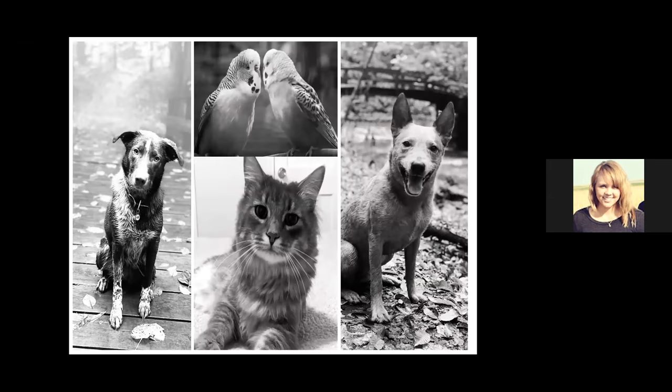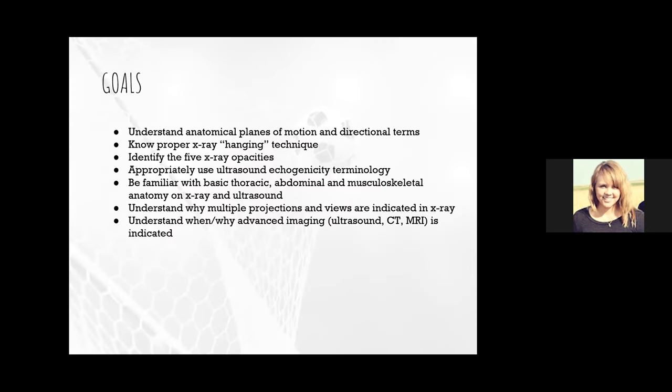Just in case you hear my pets in the background, I apologize in advance. So, some of the things we're going to cover: anatomical planes of motion and directional terms, how we properly hang an x-ray, identifying the five x-ray opacities, and using appropriate ultrasound terminology. We'll go through basic thoracic, abdominal, and musculoskeletal imaging on x-rays and ultrasound. And importantly, why sometimes we need multiple projections and views, and why x-rays don't answer everything — when we need advanced imaging like ultrasound, CT, or MRI.